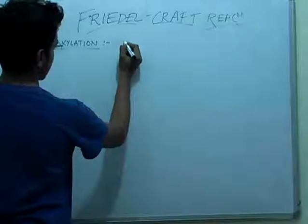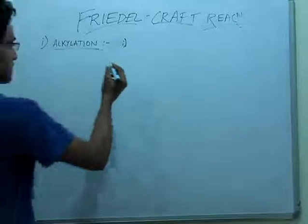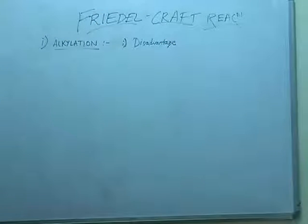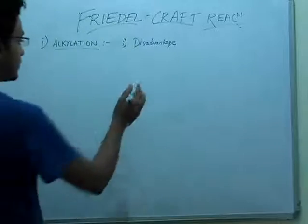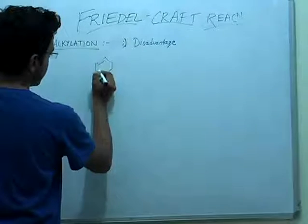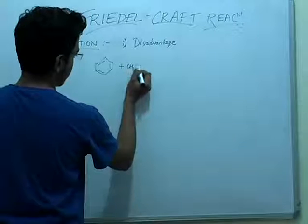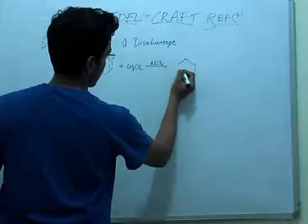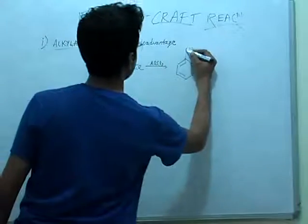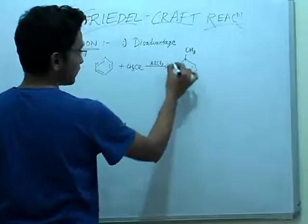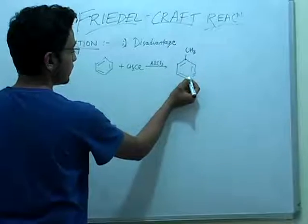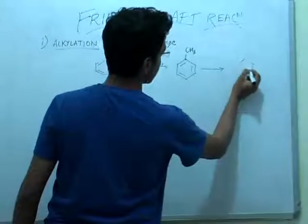Now, some important points about alkylation. First point: it has a major disadvantage. The product which is formed is more nucleophilic than the reactant. For example, we start with benzene and CH3Cl to give toluene. Since CH3 is an activating group, this ring will activate the ring further, so this reaction will not stop here.